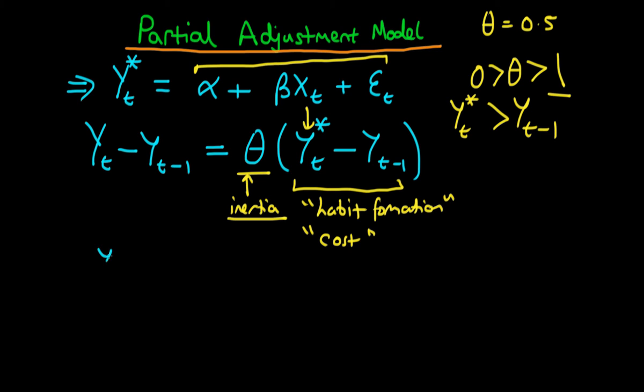If we do that, we get that yt minus yt-1 is equal to theta times y*t. Well, theta times y*t is just theta times this whole thing, so we get theta alpha plus theta beta times xt plus theta times et. And taking yt-1 to the other side, we get plus (1-theta) times yt-1.